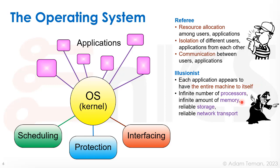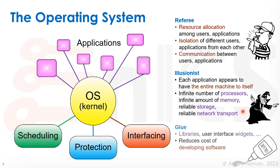The OS as illusionist allows us to have an infinite number of processors, an infinite amount of memory, reliable storage, and reliable network transport. And it is kind of a glue that provides all kinds of libraries, a user interface, widgets, and so forth that reduces the cost of developing software.